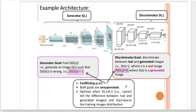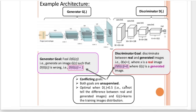Both of these goals are unsupervised — you do not need labels from the real images. You only need to feed pairs. The optimal end goal is that the discriminator will classify images with 50% probability as real or fake. If we classify at 50%, it means we cannot tell the difference between real and generated images. GANs learn the training images distribution.